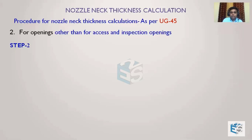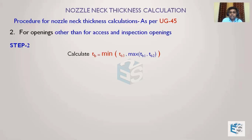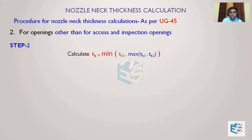Then we move to step 2, where we calculate the next thickness called T_B. T_B is not a single thickness — we choose it from three different thicknesses: T_B1, T_B2, and T_B3.